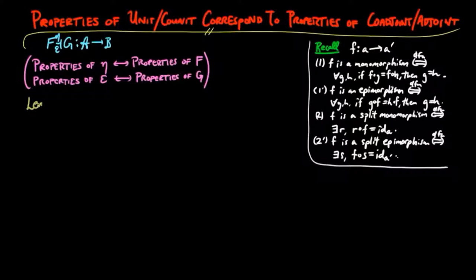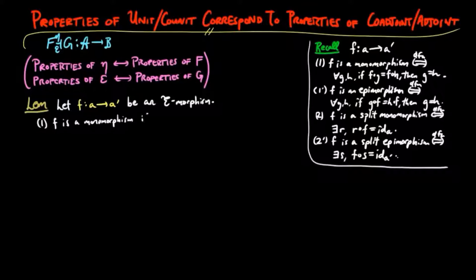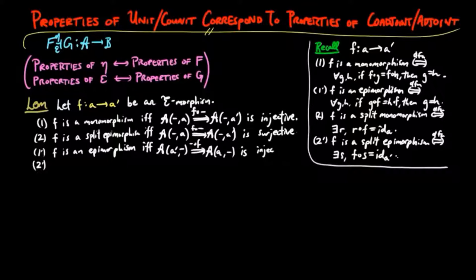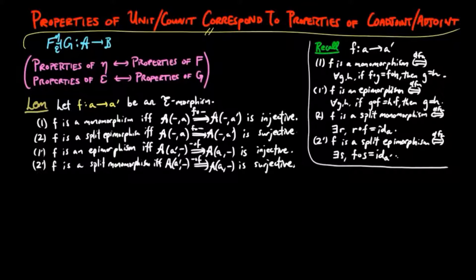The main result of this section will be an easy consequence of the following lemma. Let F: A to A' be an e-morphism for an arbitrary category E. Then: (1) F is a monomorphism if and only if the natural transformation of post-composition by F is injective. (2) F is a split epimorphism if and only if post-composition by F is surjective. And we have the dual statements: (1') F is an epimorphism if and only if the natural transformation of pre-composition by F is injective. (2') F is a split monomorphism if and only if pre-composition by F is surjective. By injective and surjective of the natural transformation, we mean that at each component, the set-morphism is injective or surjective.